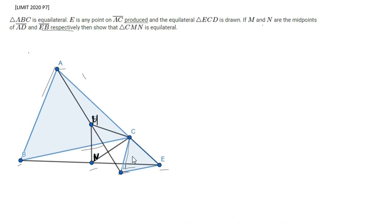I'd like to go with coordinate bashing, although you can go with any method you like. First of all, let's assume that C is at the origin, since a lot of lines are meeting here. So let's set C to (0, 0), that is the origin.